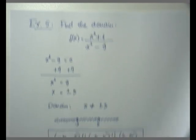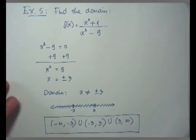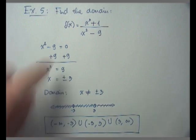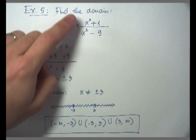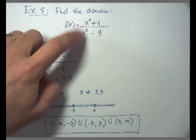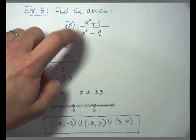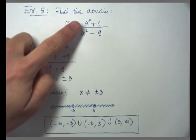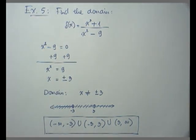At this point we have had about three examples where the function encounters fractions, and you can see that throughout those examples you never had to deal with the numerator. When you're trying to find the domain of a rational function — a function that involves fractions — when you run into a fraction you never have to deal with the numerator. You only have to pay attention to the denominator.